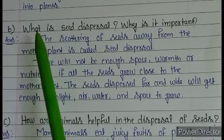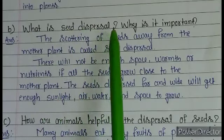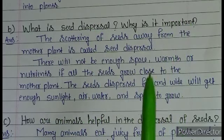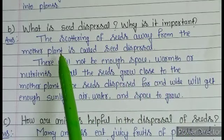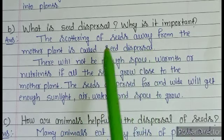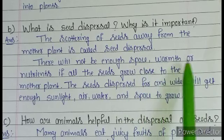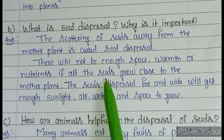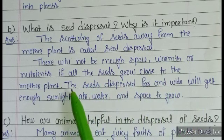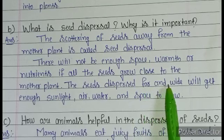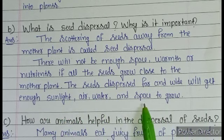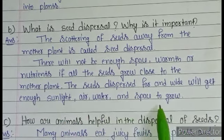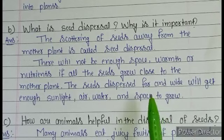Question B: what is seed dispersal and why is it important? Answer: the scattering of seeds away from the mother plant is called seed dispersal. There will not be enough space, warmth, or nutrients if all the seeds grow close to the mother plant. The seeds dispersed far and wide will get enough sunlight, air, water, and space to grow — so seed dispersal is very important for plants.